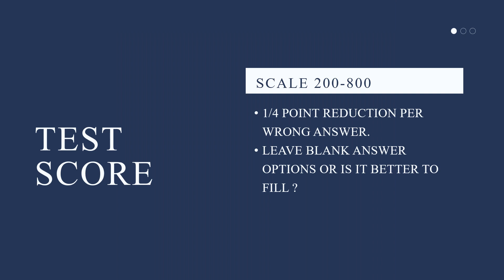The fourth thing I would like to dwell on is the test score. Your work is evaluated using an 800-point scale, where the minimum score is 200 and the maximum is 800 points. For example, I scored 790 out of 800 possible, which is about a couple of questions that were incorrectly noted. Also, it is worth noting that your one correct answer becomes invalid if you mark four questions incorrectly. I would also like to pay attention to a rather important question that students often have when preparing: leave blank answer options or is it better to fill? In my opinion, it is better to build on the number of questions that you didn't answer and take into account all the risk of loss or vice versa to obtain additional points.